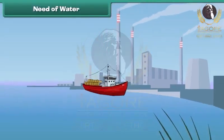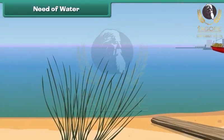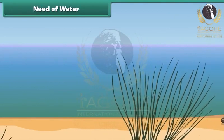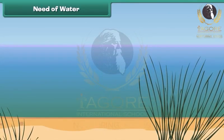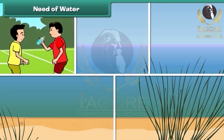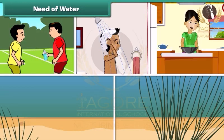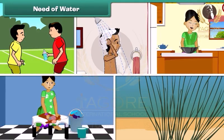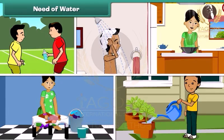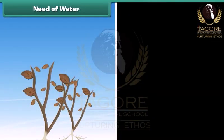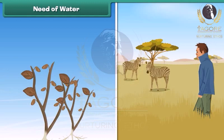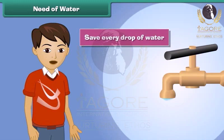We know air is very essential for our life, but did you ever wonder why water is so important? We need water to drink, to bath, to cook, to wash our clothes, to water plants, and for so many other reasons. Without water the plants would die and people and animals would go thirsty. So children, save every drop of water and don't let it go to waste.